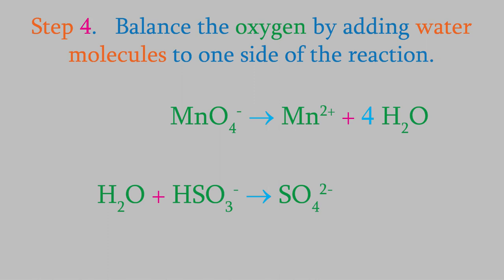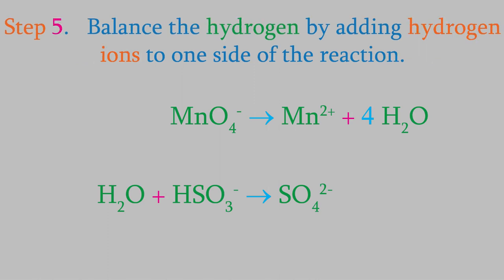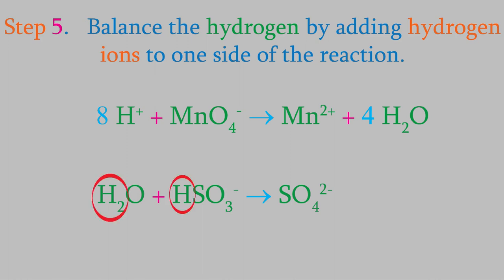Now we move on to step 5, in which we balance the hydrogens by adding H+ ions until there are equal numbers of hydrogens on both sides of the arrow. In the reduction reaction, there are no hydrogens on the left but there are eight on the right, so we'll add eight H+ ions to the left side. In the oxidation reaction, there are three hydrogens on the left — two from the water and one from the bisulfite — and there are none on the right side, so we'll add three H+ ions to the right side.